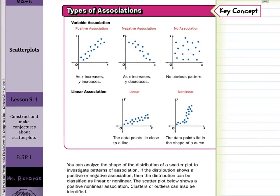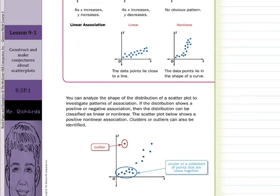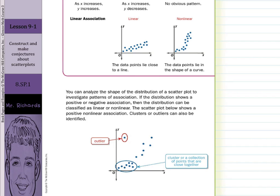You can analyze the shape of the distribution of a scatter plot to investigate patterns of association. If the distribution shows a positive or negative association, then the distribution can be classified as linear or nonlinear. The scatter plot below shows a positive nonlinear association. Clusters or outliers can also be identified — a cluster is where you see a bunch of data points all gathered at once, while an outlier is a point sitting out there that doesn't fit the general trend.